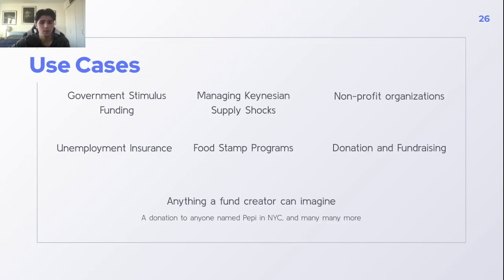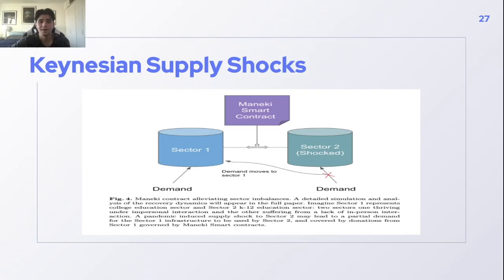One of the most interesting applications we're thinking of is managing Keynesian supply shocks. A Keynesian supply shock is essentially when a sector shock shifts demand — sector one starts doing much better while sector two loses all demand. Today, monetary policy is generally ineffective at balancing these sector imbalances because it's done from a very centralized point of view with little insight into individual businesses. With something like Maneki, you could set an intertemporal smart contract between two sectors to dynamically micromanage sectors — setting different interest rates or payroll taxes between sectors to balance things in real time during an economic downturn.